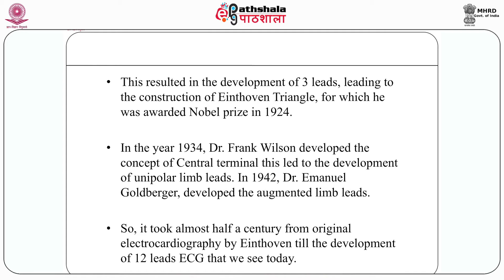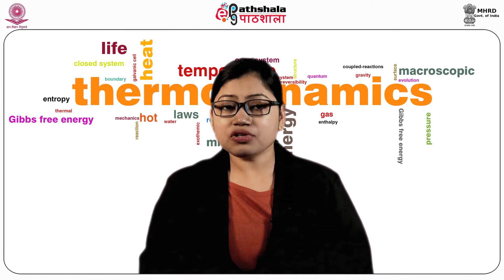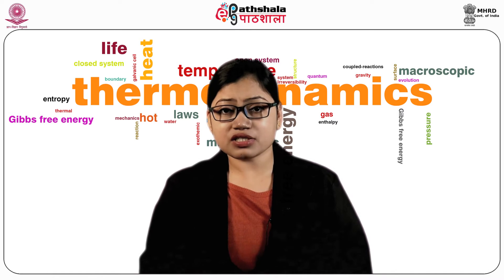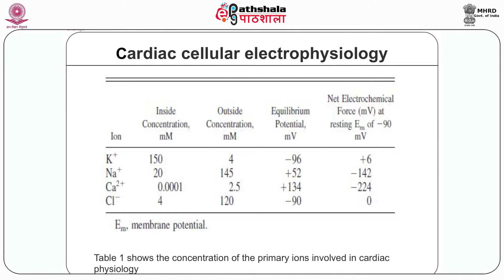With further development in 1934, Dr. Frank Wilson developed the concept of the central terminal, which led to the development of unipolar limb leads. In 1942, Dr. Immanuel Goldberger developed the augmented limb leads. It took almost half a century from the original electrocardiography by Einthoven until the development of the 12-lead ECG we see today. The old string galvanometer electrocardiograph was a big machine with the patient rinsing its extremities in cylindrical electrodes filled with electrolyte solution.